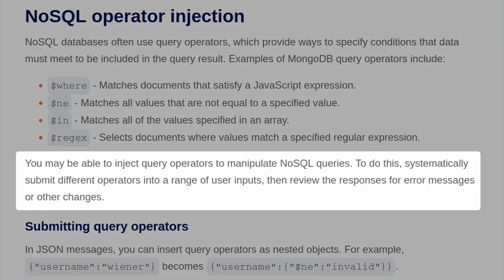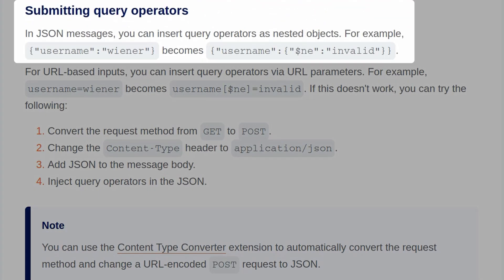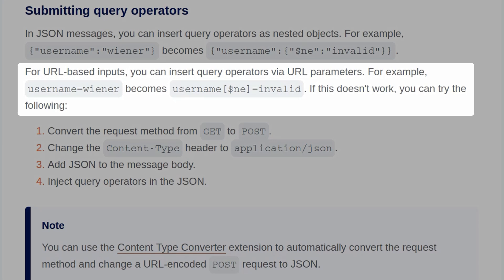You may be able to inject query operators to manipulate NoSQL queries. To do this, we systematically submit different operators into a range of user inputs and review the responses for error messages or other changes. In JSON messages, you can insert query operators as nested objects. For example, the username wiener can become a JSON object with the not-equals operator, looking for any usernames that don't equal invalid. For URL-based inputs, you can insert the query operators via URL parameters similarly.